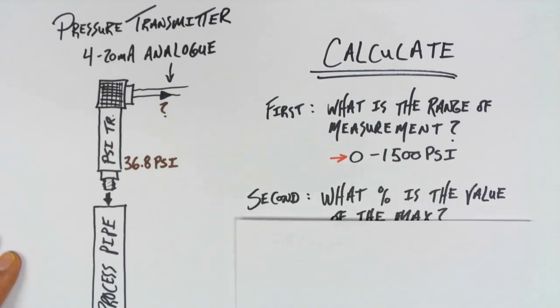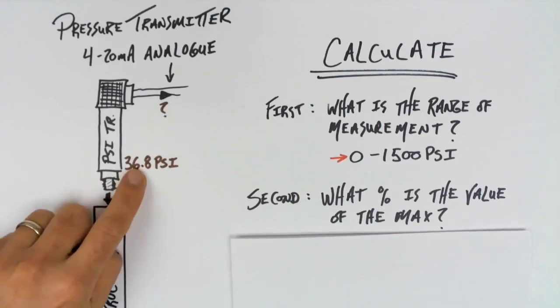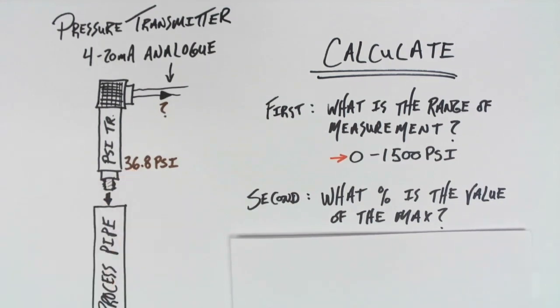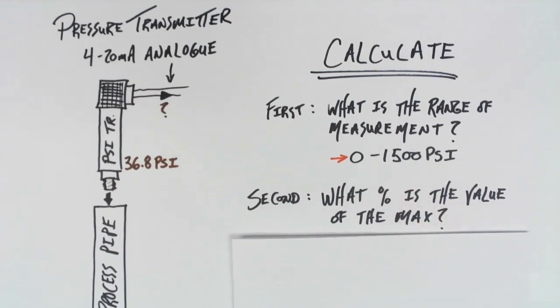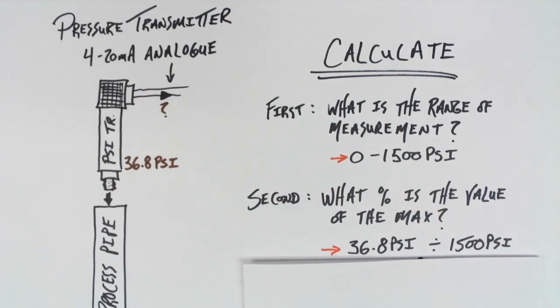The next step we're going to do is figure out what the percent is, the value of the maximum. So, the value is 36.8. The maximum is 100. We're going to do a very basic percentage calculation, 36.8 divided by 100, and this will give me a percentage of 2.45%.